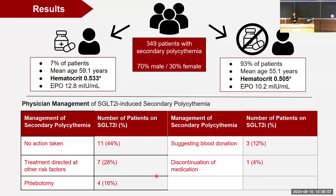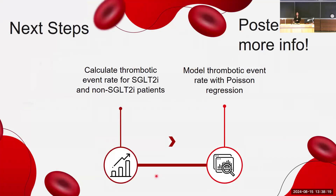When looking at physician management, 44% of patients had no action taken to treat this, and just one patient had their medication discontinued. To wrap up, the story of SGLT2 inhibitors reveals a complex interplay of risks and benefits, highlighting the need for a deeper understanding to establish guidelines for patient treatment. You can find me at poster number seven. Thank you.